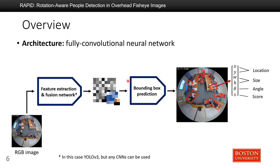Here is an overview of our proposed approach. We use a fully convolutional neural network to directly predict the bounding boxes of people. Given an input image, we first use a convolutional net to extract features at different resolution levels — in this case with DarkNet v3, but any other convolutional net can be used. After obtaining the features, we use another convolutional net to predict the bounding box parameters. Each bounding box is represented by six parameters: the center location, size, angle, and the confidence score.